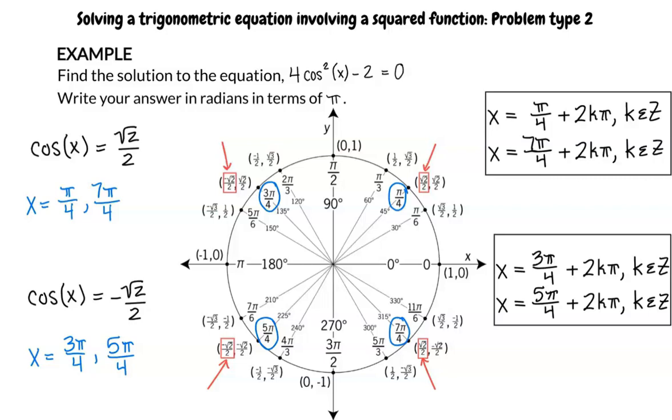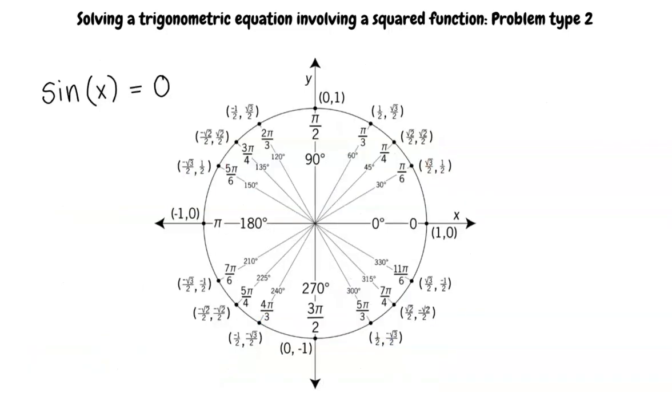Okay, I understand this notation, but I have noticed that in other problems, the answer is written with k pi instead of 2 k pi. Why is this? This is because in some cases, for example, when dealing with sin of x equal to 0, it is not necessary to go all the way around the unit circle to reach another value where sin of x is equal to 0.